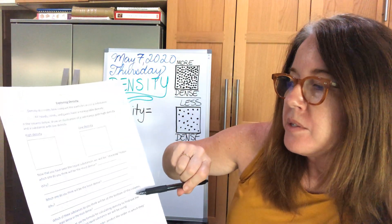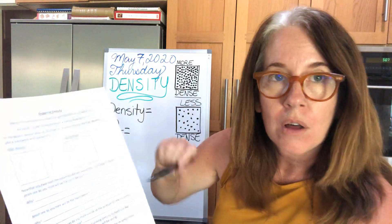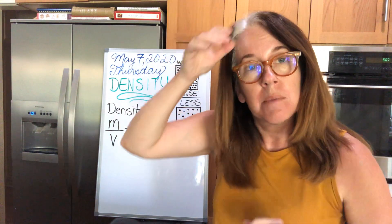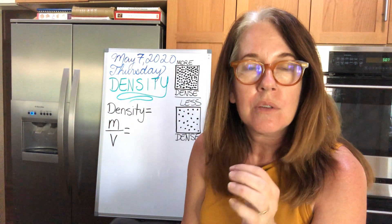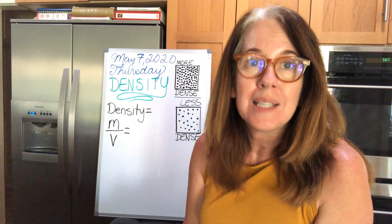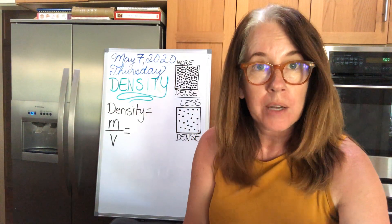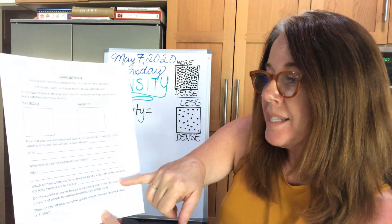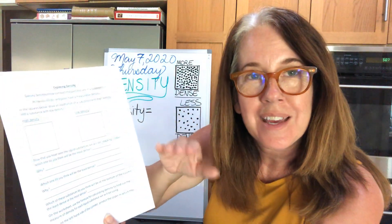Right below that, it says: which of these substances do you think is going to be at the bottom of the column? We're going to be stacking some liquids in a glass column today. Predict whether the ones that are more dense or less dense are going to be the ones down at the bottom of the cylinder, and write that here — most dense or least dense. Go ahead and pause the video, fill out all the blanks, and when you're done with the last one, hit play again and we'll continue.